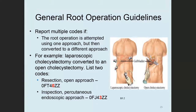Let's talk about some general guidelines for approach values. If different root operations are used during a surgery, use different codes for each approach. The general rule is that if more digits are needed to tell the full story, code each separately. For example, a laparoscopic cholecystectomy converted to an open cholecystectomy: you list two codes — resection with approach zero (open), and inspection percutaneous endoscopic with approach 4. The resection is coded first because it's the larger, more risky procedure.